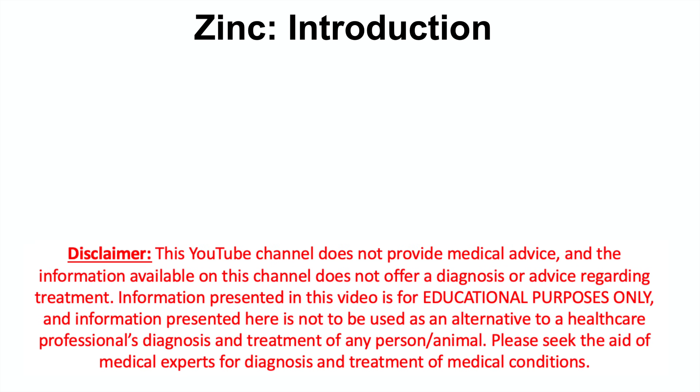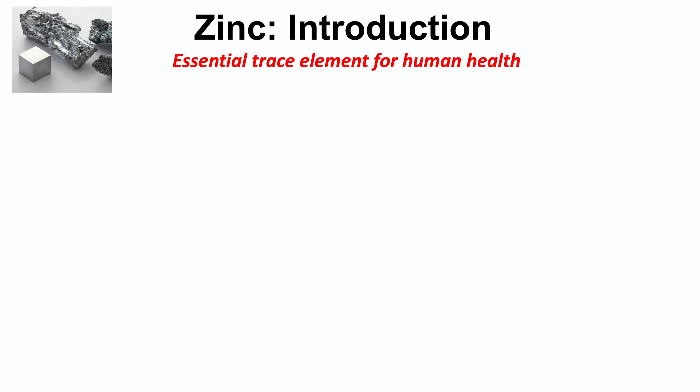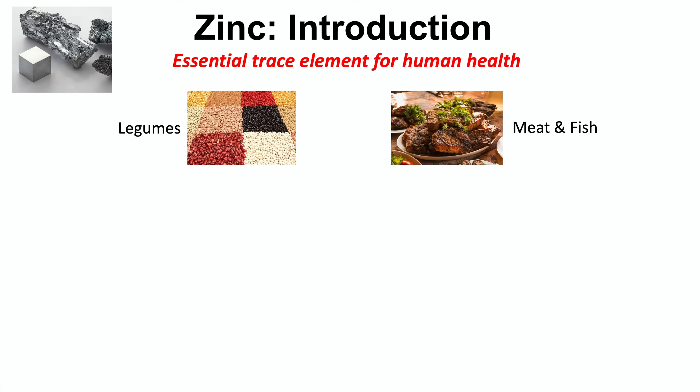Zinc deficiency can cause a variety of signs and symptoms. We're going to talk about those signs and symptoms in this lesson, but before we get into those, let's talk about what zinc is and where we actually get it. Zinc is an essential trace element for human health, acquired from our diet — from eating meat, fish, and legumes. These are two major sources of zinc.